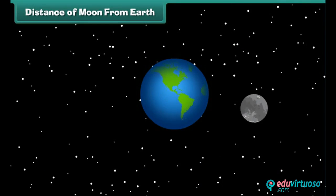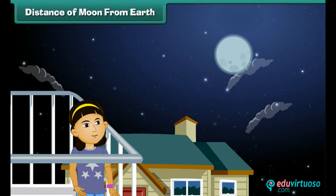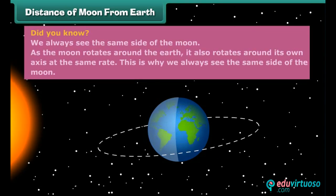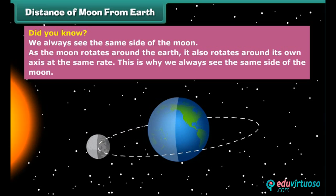The moon is an average of about 380,000 kilometers from Earth, which is pretty close. Because of its proximity, we don't need a telescope to see features on the moon's surface from Earth. Did you know we always see the same side of the moon? As the moon rotates around the Earth, it also rotates around its own axis at the same rate — this is why we always see the same side of the moon.